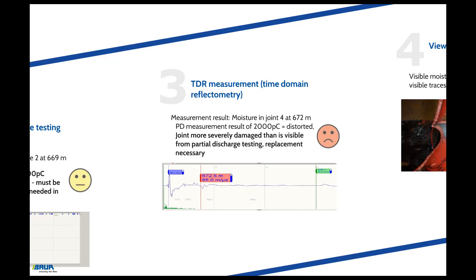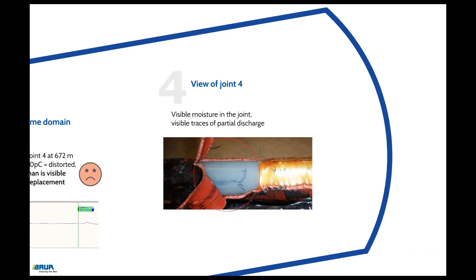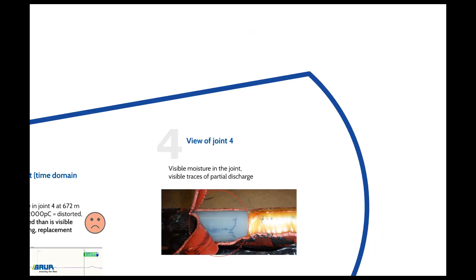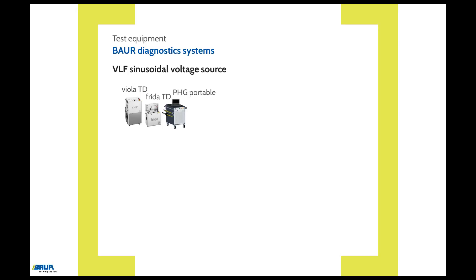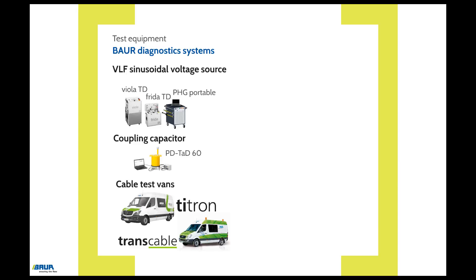The partial discharge measurement of 2000 pC is therefore a distorted result caused by the moisture in the joint. The joint is more severely damaged than can be seen from the partial discharge testing and should be replaced immediately to prevent a failure during operation. The subsequently exposed joint exhibits clear traces of partial discharges as well as moisture. The decision to replace the joint immediately was therefore appropriate. To perform measurements like the one described in the example, a VLF sinusoidal voltage source is required, such as FridaTD, ViolaTD, or PHG from Bauer. With the PDTAT60 partial discharge diagnostic system and a PC to control it, the measurement of the dissipation factor and partial discharges can be performed in parallel. This is also used as a system in the cable test vans.